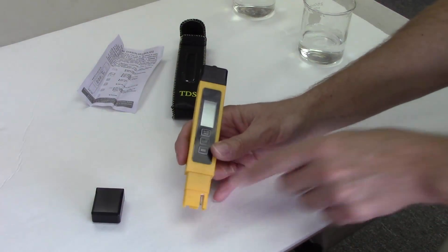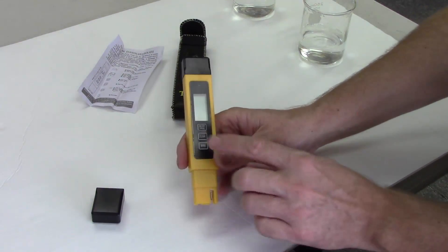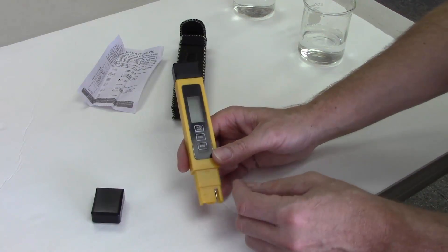You only need to stick the part of the probe at the bottom in the water. You've got three buttons: on/off, clear, and mode.